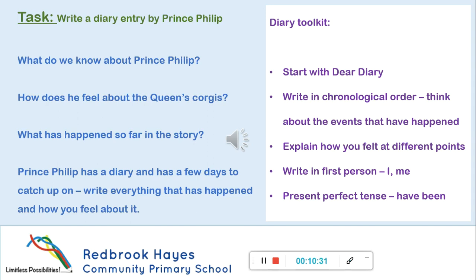In purple to the side, you can see I've given you a diary toolkit. Some things to help remind you of what you need to include when you're writing a diary and techniques to make it as effective as it can be. Remember to start with Dear Diary. Write in chronological order. Think about the events that have happened and write them in that order. Explain how you felt at different points. Make sure you're writing in first person, using the pronouns I and me. Also use that present perfect tense, using words like have been. Good luck with this, guys. This can be done in your exercise book. Have fun. Bye.